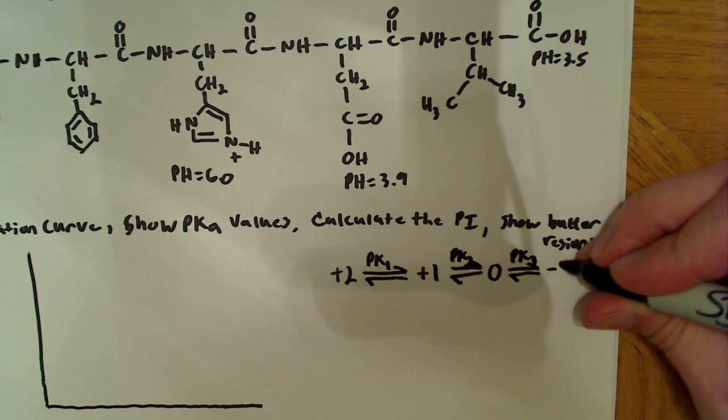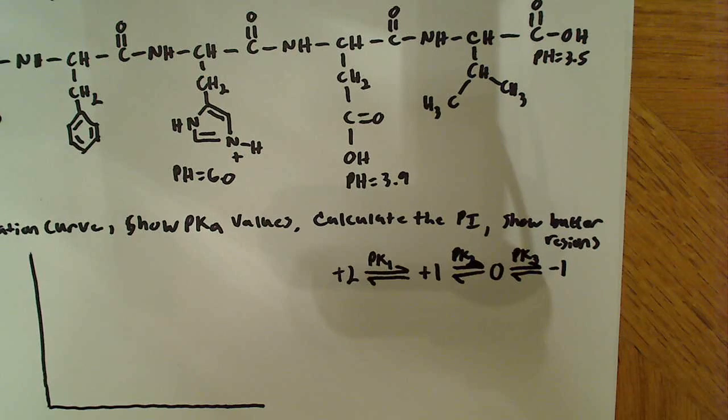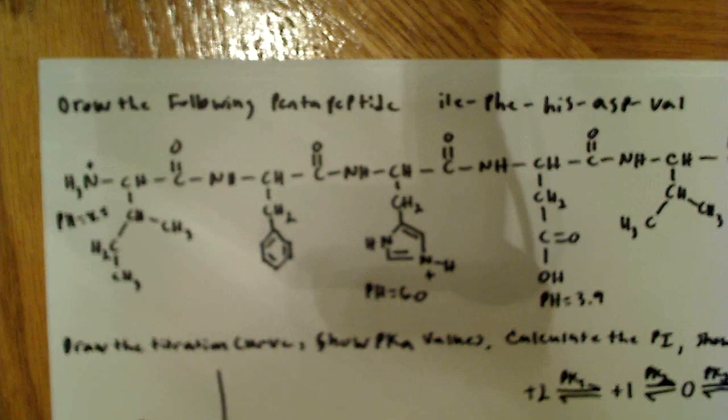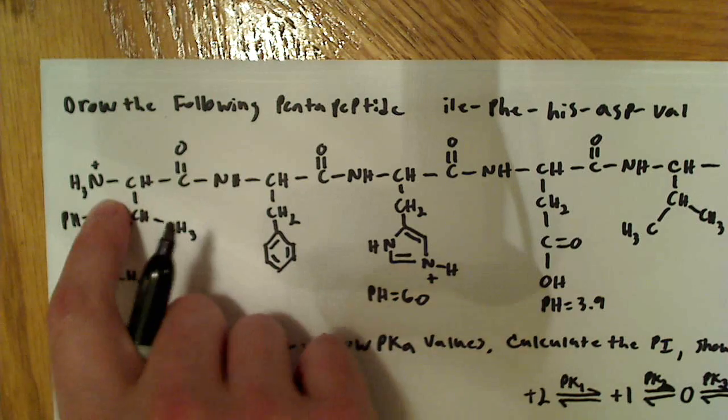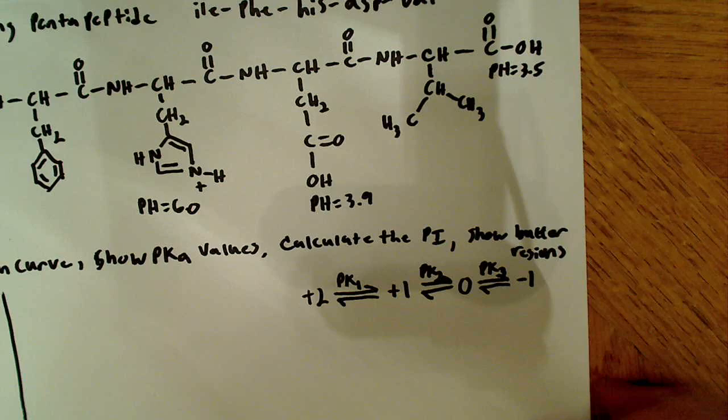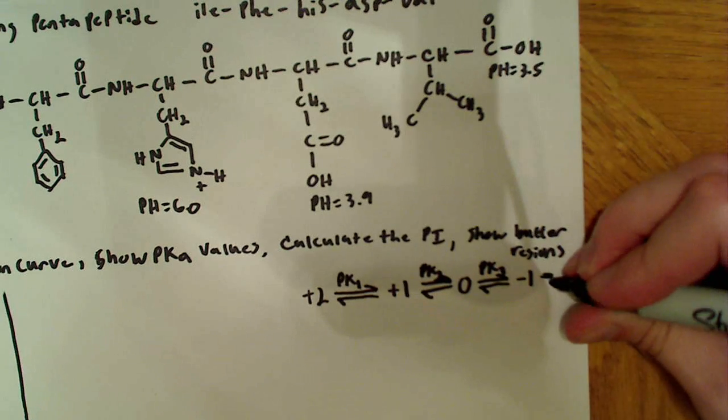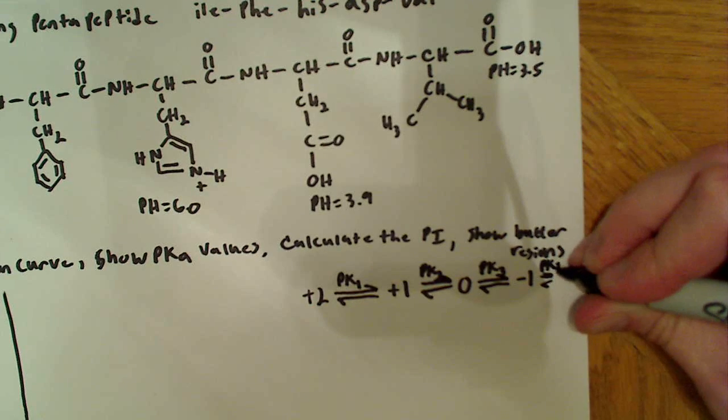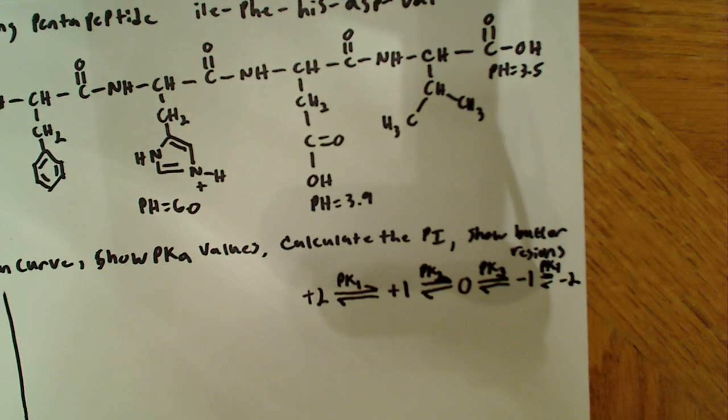So this will give us a minus 1 charge. And then the last group to lose its proton will be this one over here, and that will be pK4. That's pK4, and that will be minus 2.